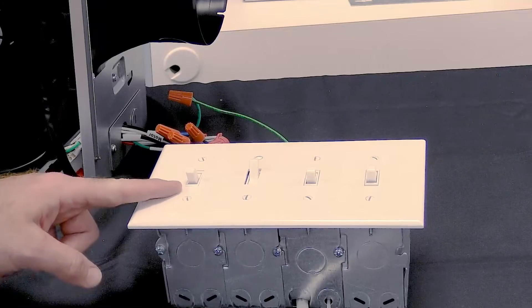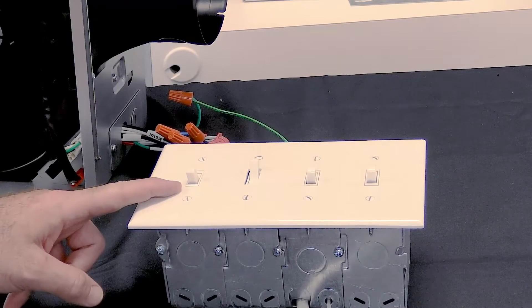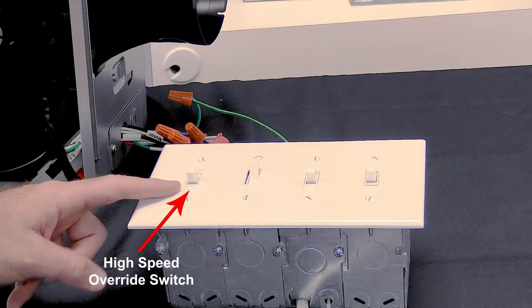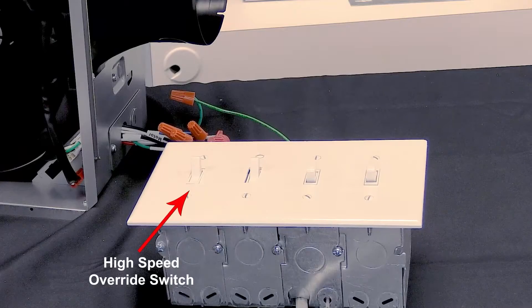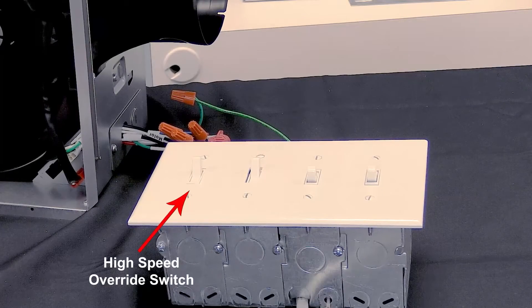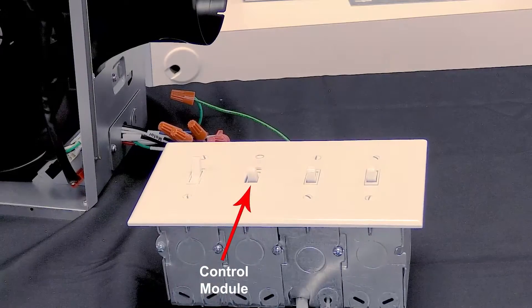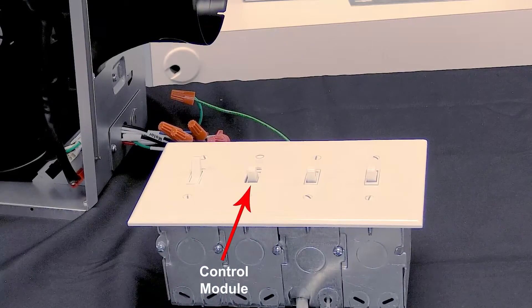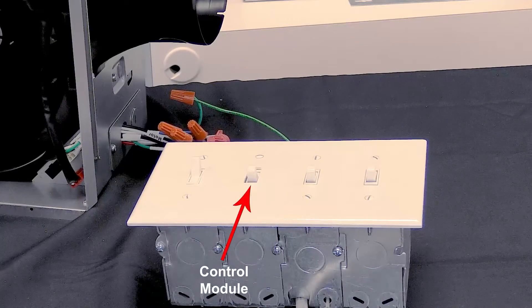The motor's wiring harness's associated switch that I'm pointing to is sometimes referred to as the high-speed override switch, which overrides the control module operation to manually run the fan motor on high-speed. It also runs the fan on high-speed when the control module is switched to off, as you see here. This switch is wired to the black wire of the fan motor and control module.